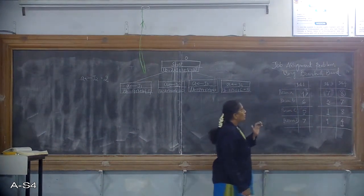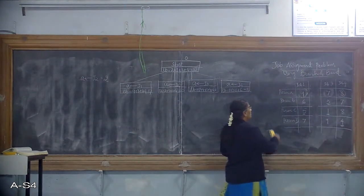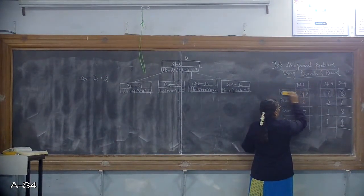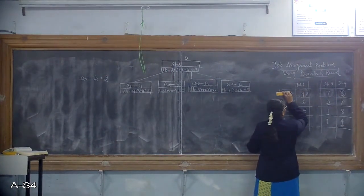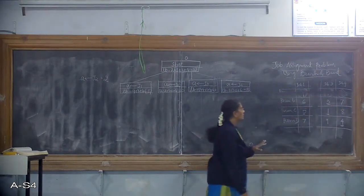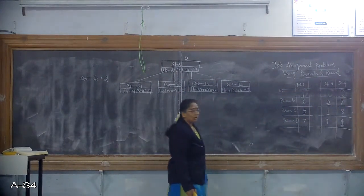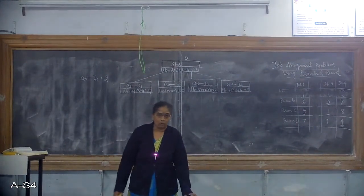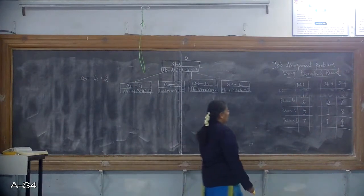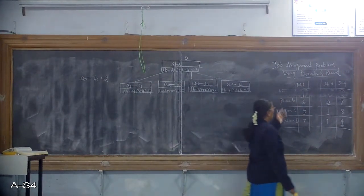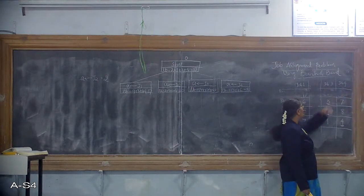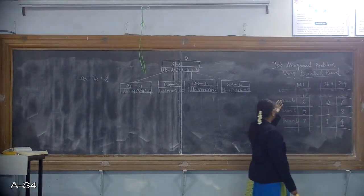Now only 3 jobs are available. Job J2 and person A are removed because the assignment has already been done. The remaining options are: 3 people — person B, C, and D — and 3 jobs: J1, J3, and J4.